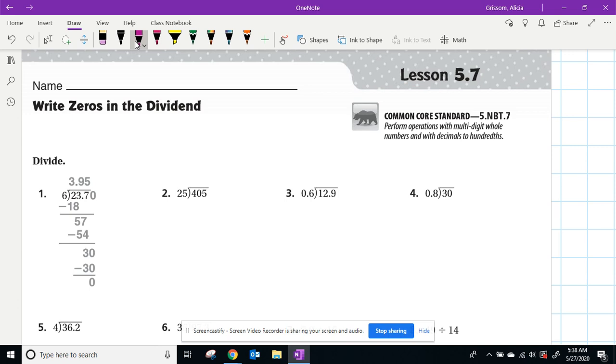So the first step is to figure out how many times 25 can go into 40. So of course, 25 cannot go into four. So we move over to the next digit and we have 40. And that is one time. And then one times 25 is 25. And then of course we subtract and we get 15.